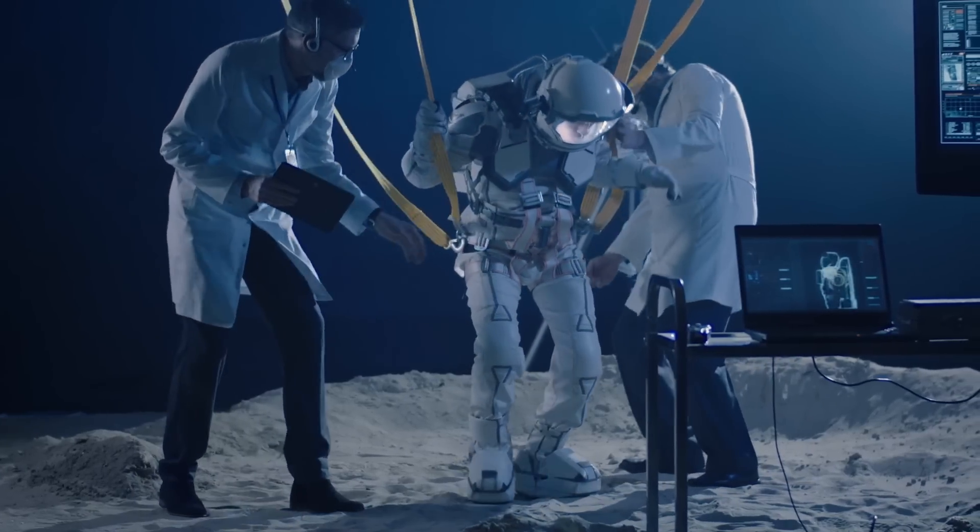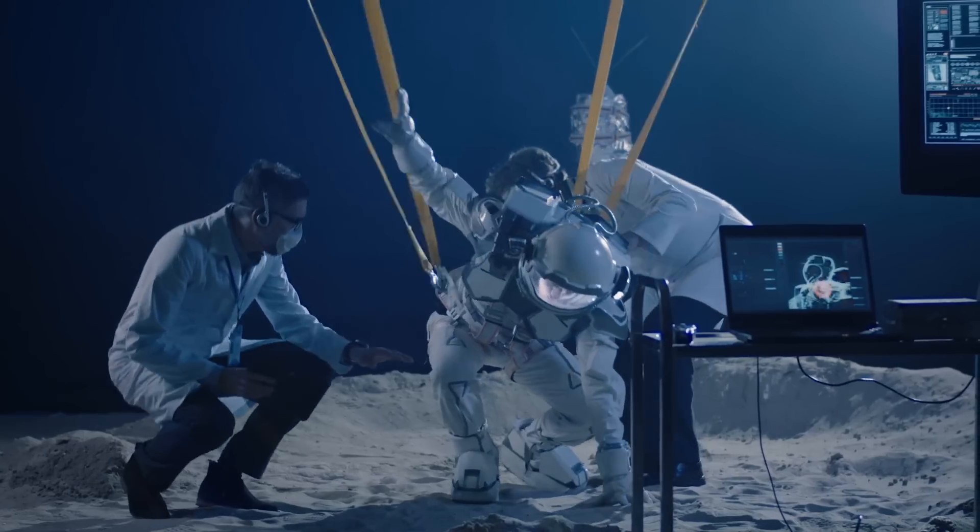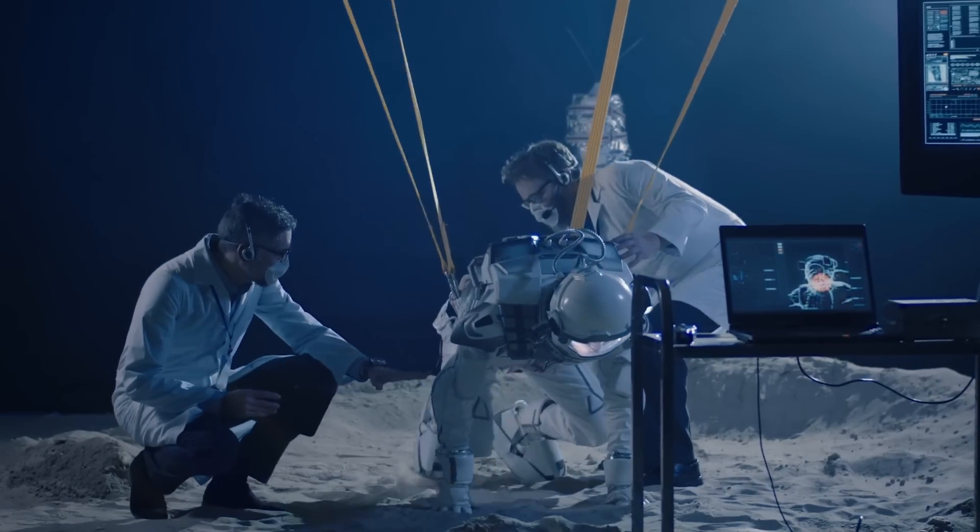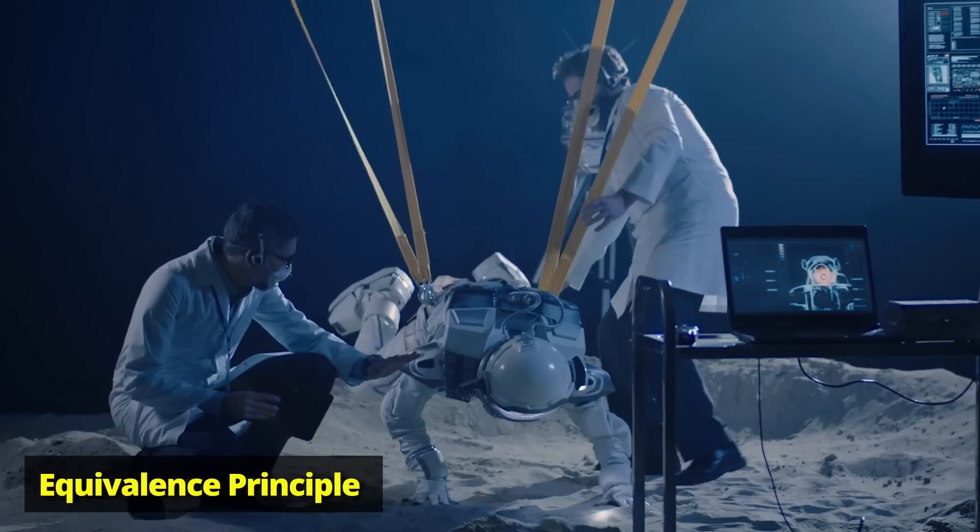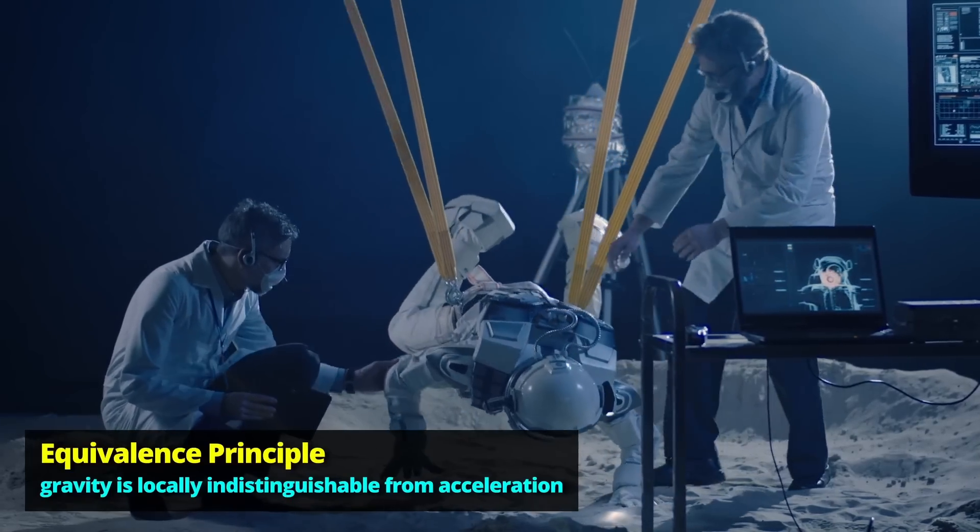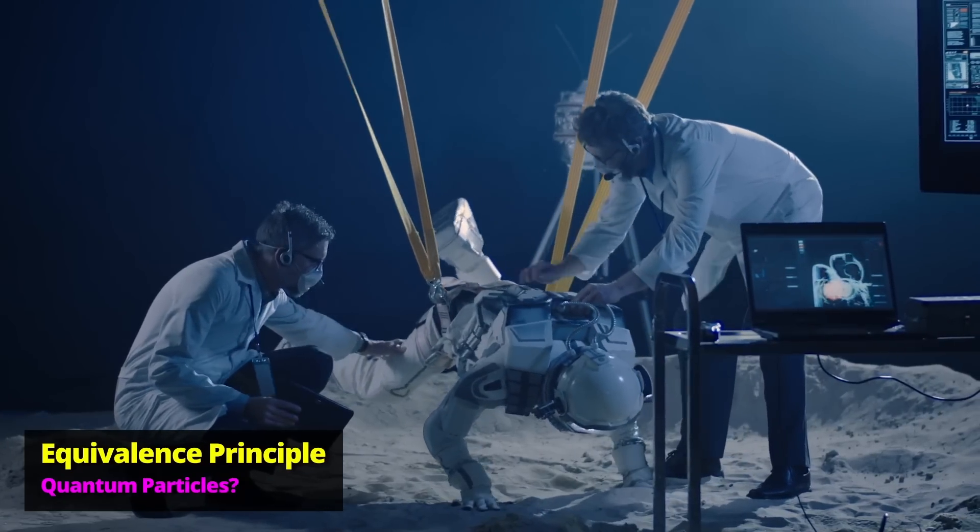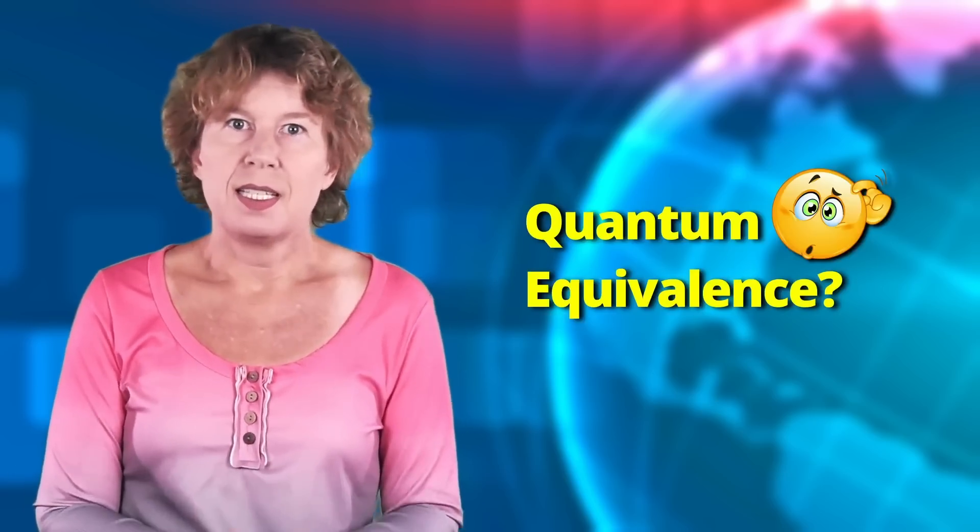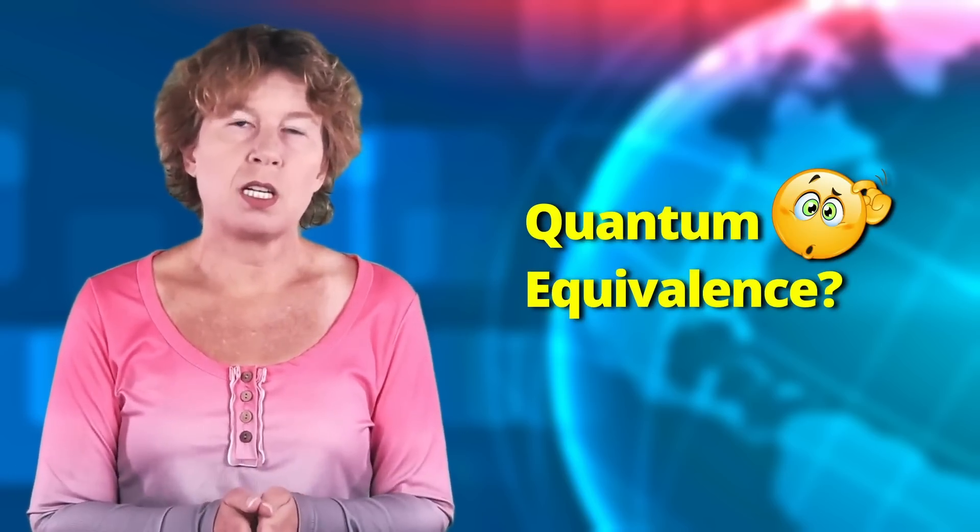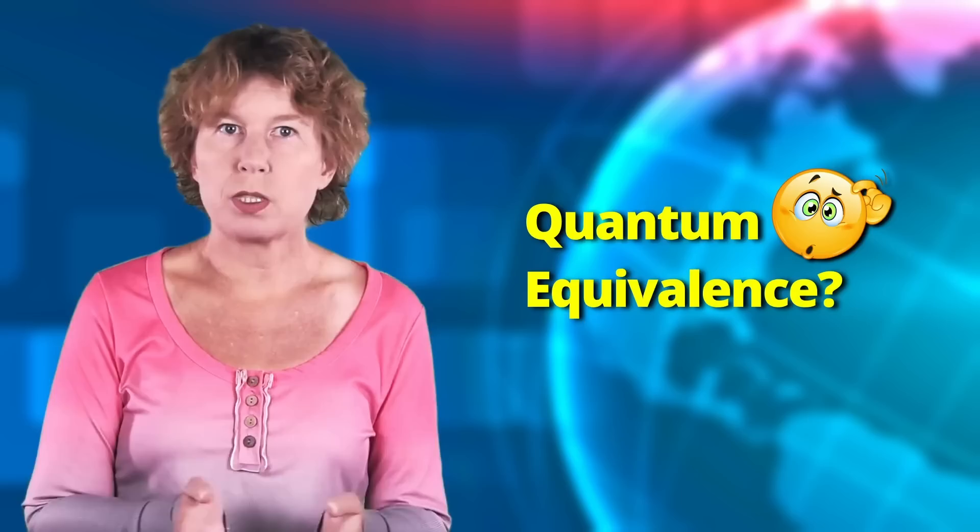The acceleration in the twin paradox can also be caused by gravity. Because that's what Einstein's equivalence principle says. It says that gravity has the same effects as acceleration. But is this also true for quantum particles? That's the part we don't know. And it's not one of these questions where there's an obvious answer. It's not clear how to generalize the equivalence principle to quantum particles.